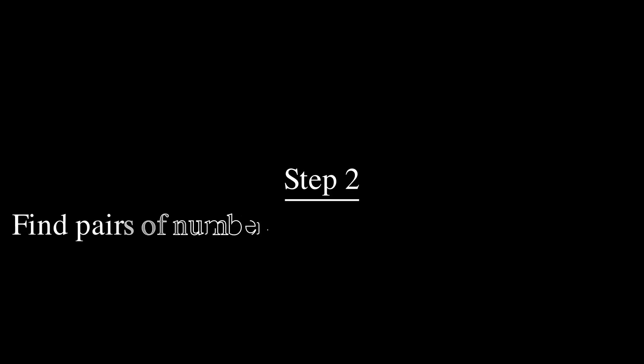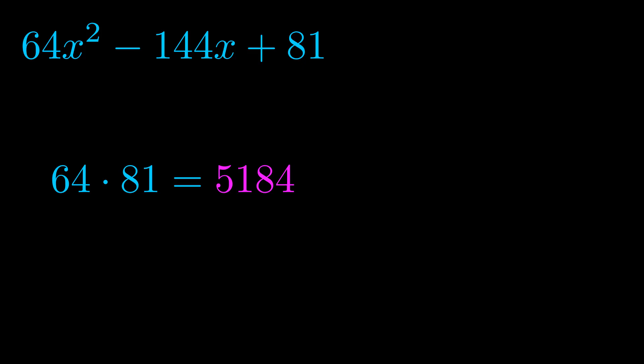Step two is to try to find all of the pairs which multiply to this number. Now it turns out you don't really need to find all of them, but go ahead and write down as many numbers as you can that multiply to the magenta value for now. Pause the video and resume when you're ready to continue.